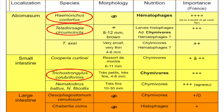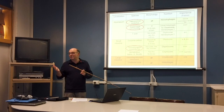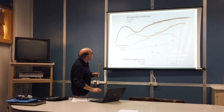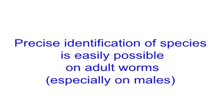What is important to keep in mind is that identification of all these parasites is very easy with adult worms, especially males but also females. Three of them are particularly important — in France, these three species represent more than 90% of the economic impact of these parasites. And of course, you know that there are different sizes.